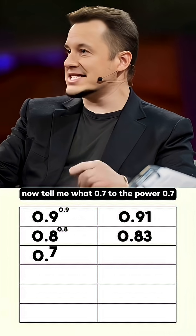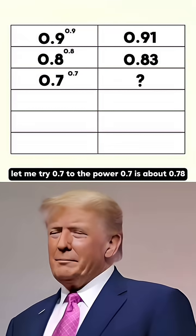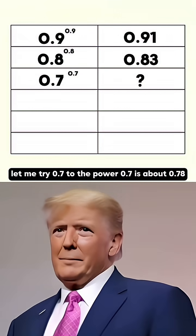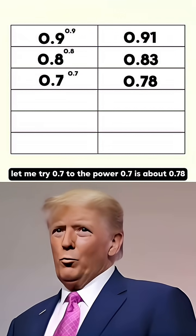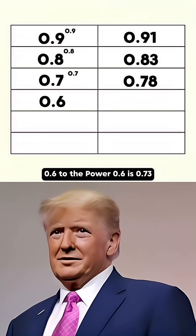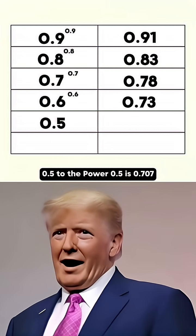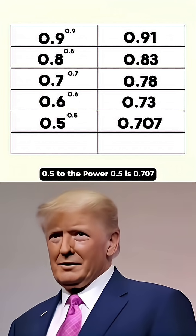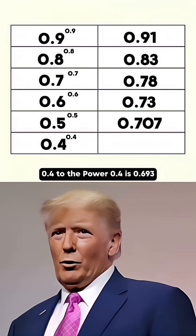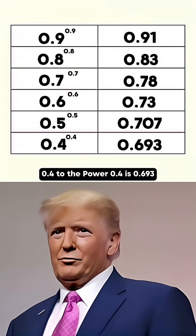Now tell me what's 0.7 to the power 0.7. Let me try. 0.7 to the power 0.7 is about 0.78. 0.6 to the power 0.6 is 0.73. 0.5 to the power 0.5 is 0.707. 0.4 to the power 0.4 is 0.693.